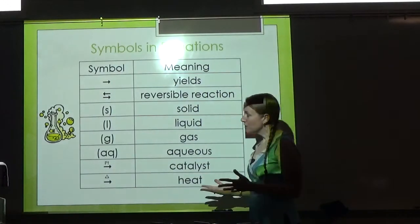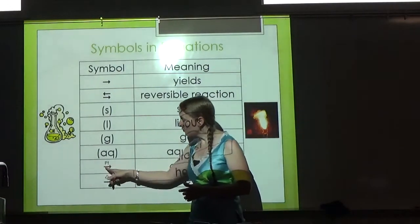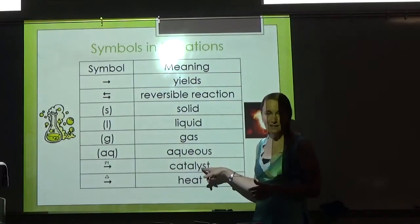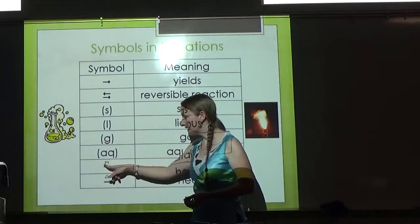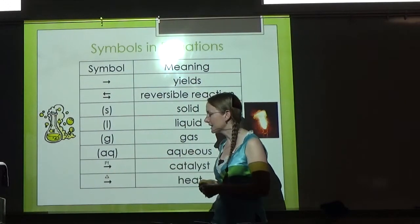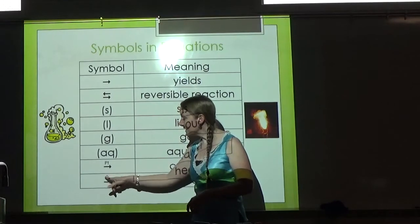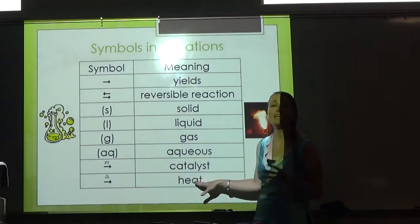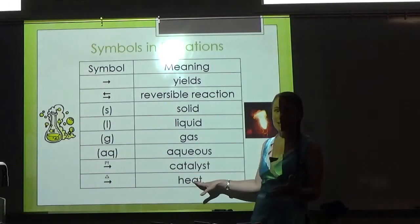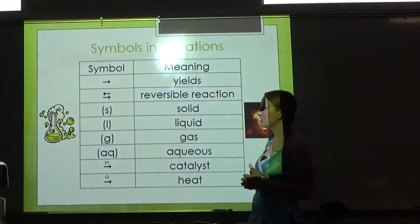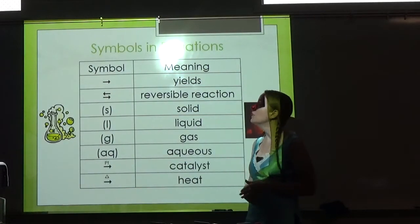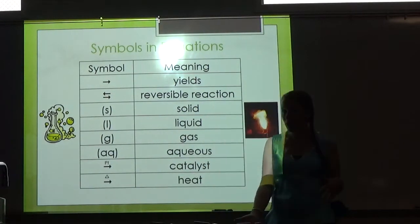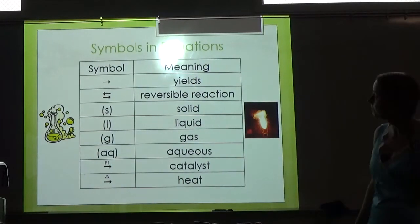Any time you see something written above the yield sign, that is a catalyst. In this case, platinum is acting as a catalyst. If you specifically see a triangle over the yield sign, that means heat is a catalyst—heat is causing that reaction to occur. These are just some things you'll see or need to write in the reactions we're about to learn about.